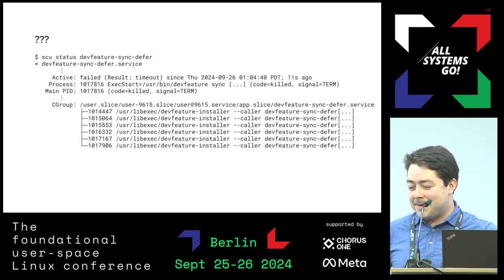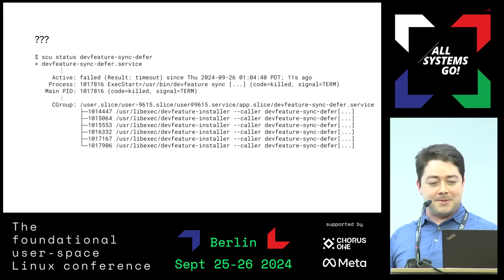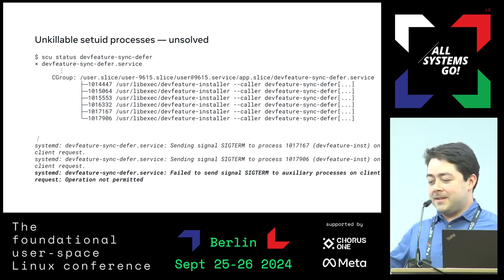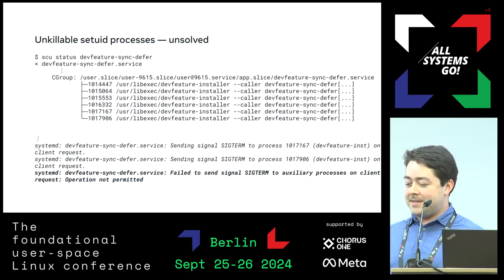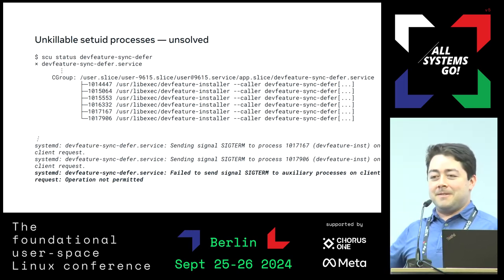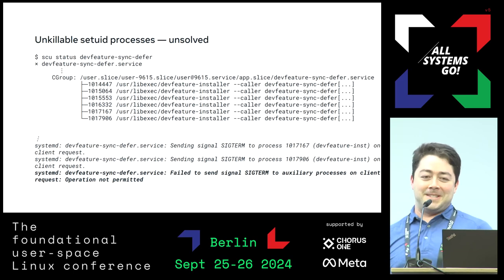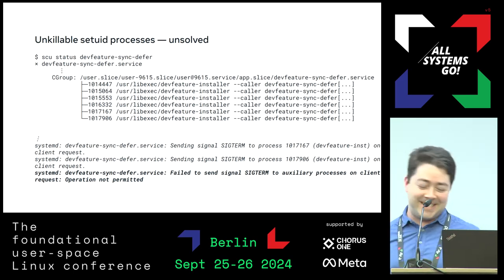One other issue: this service is stopped and says it was killed, but there are a bunch of processes in the cgroup. It turns out that is a setUID binary that runs as root, and we can't signal it from the user instance. This one is unsolved — I don't know what to do about it. I think we may just have to stop using setUID, but that's going to take a while.